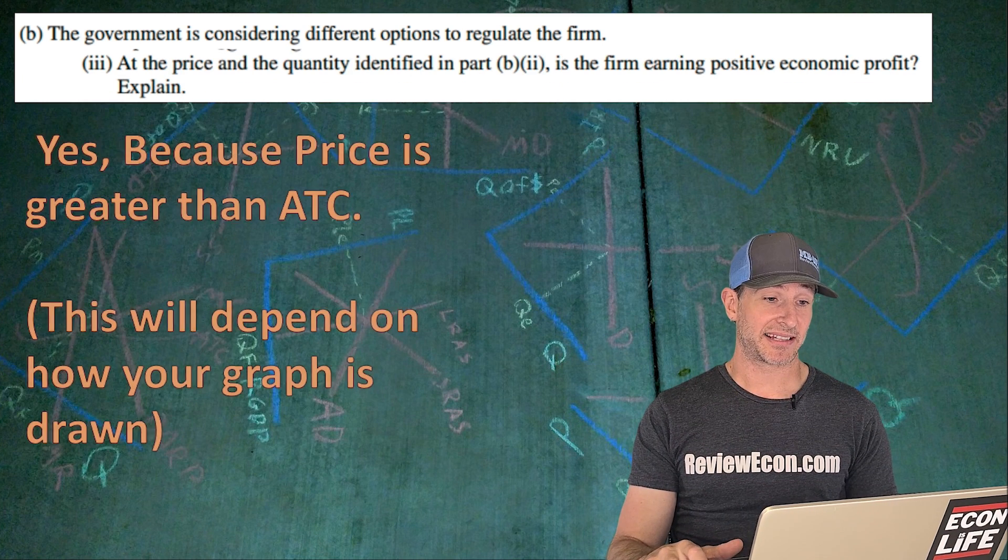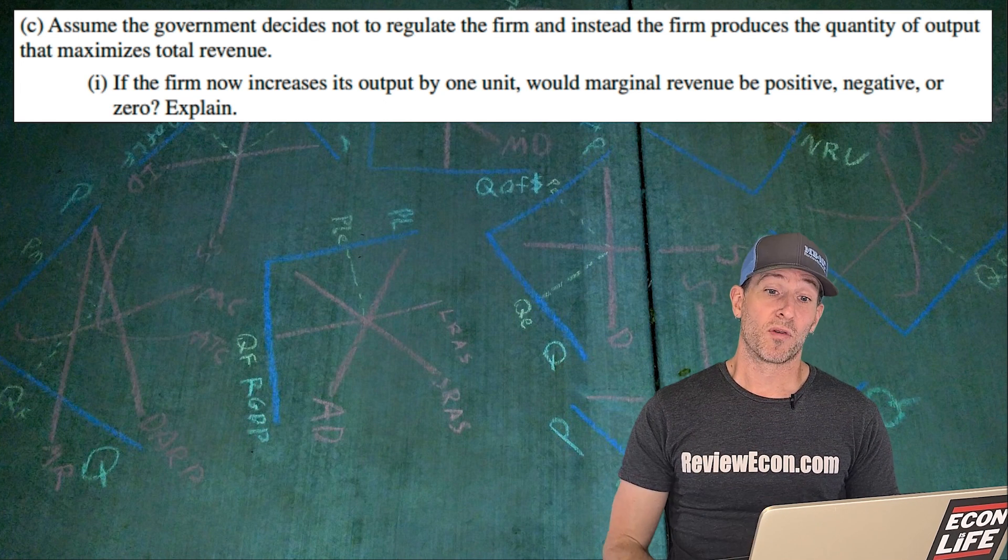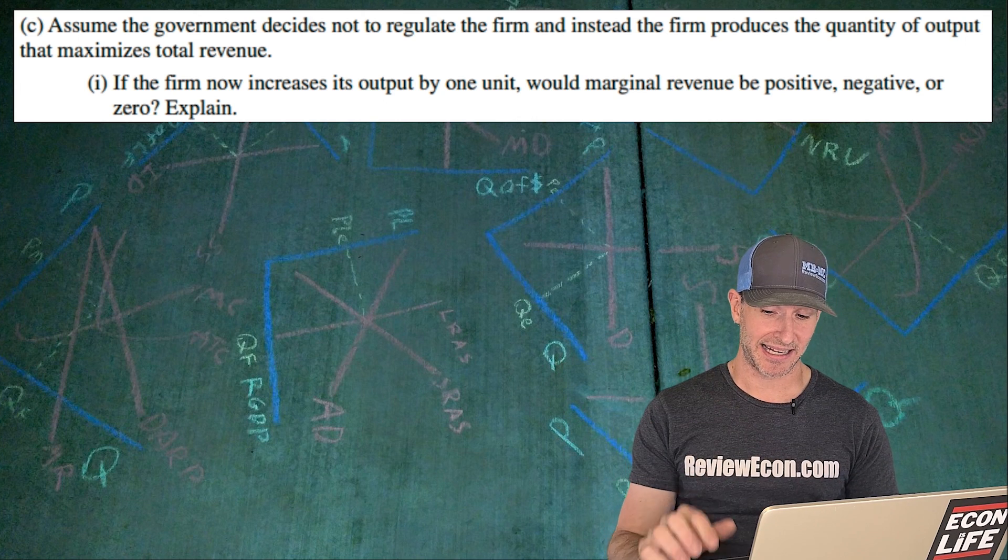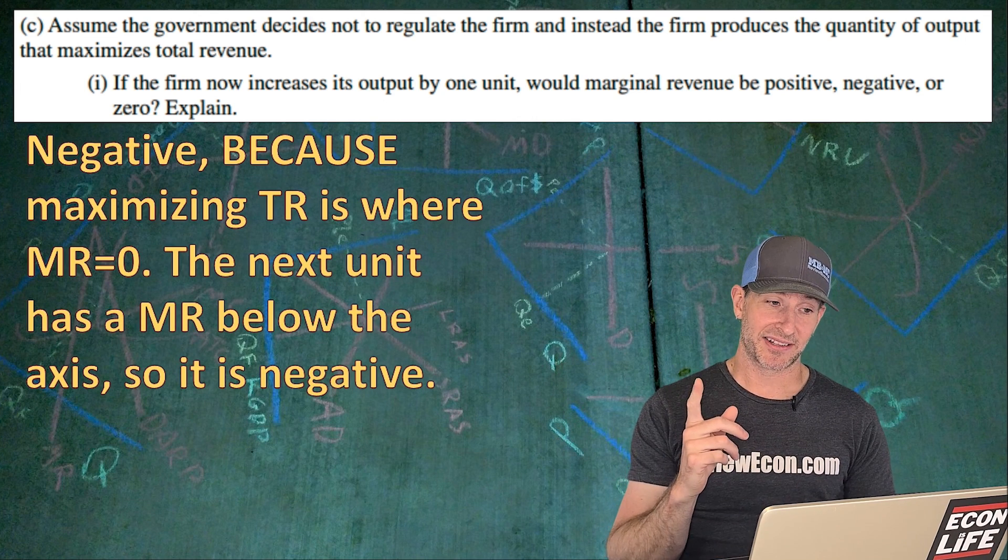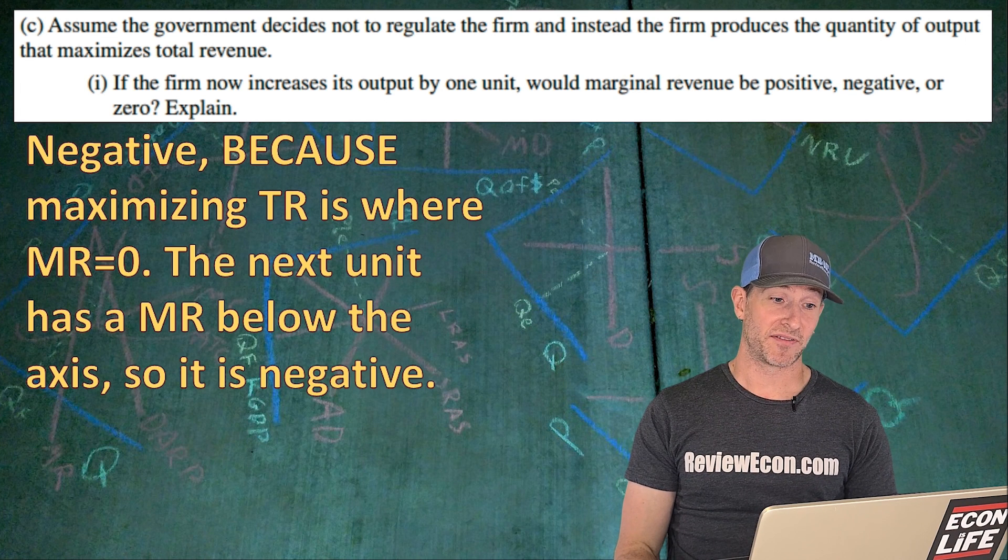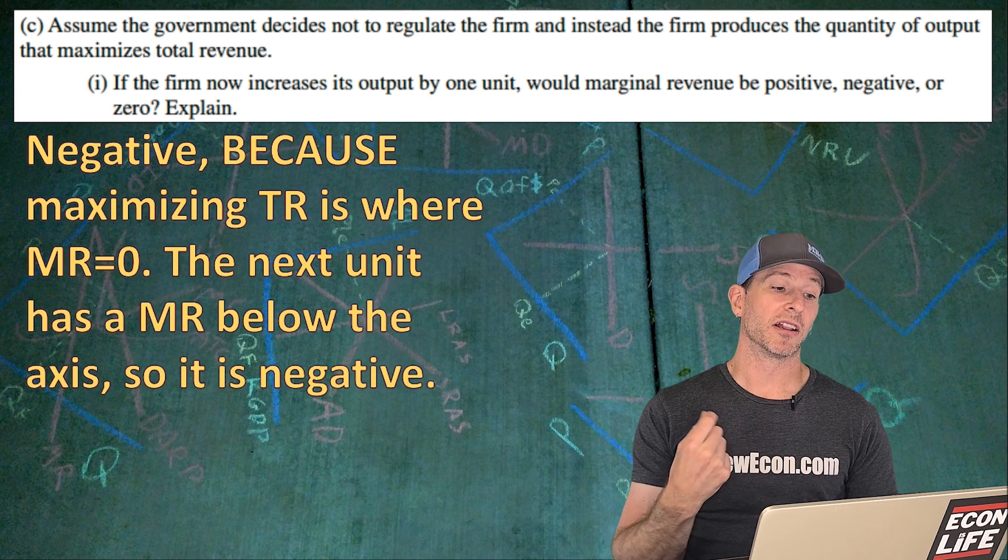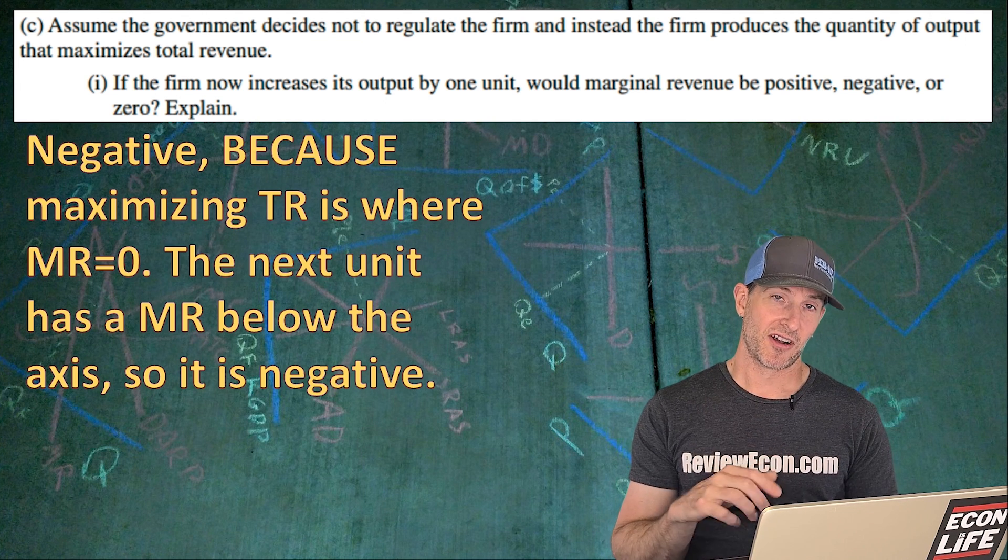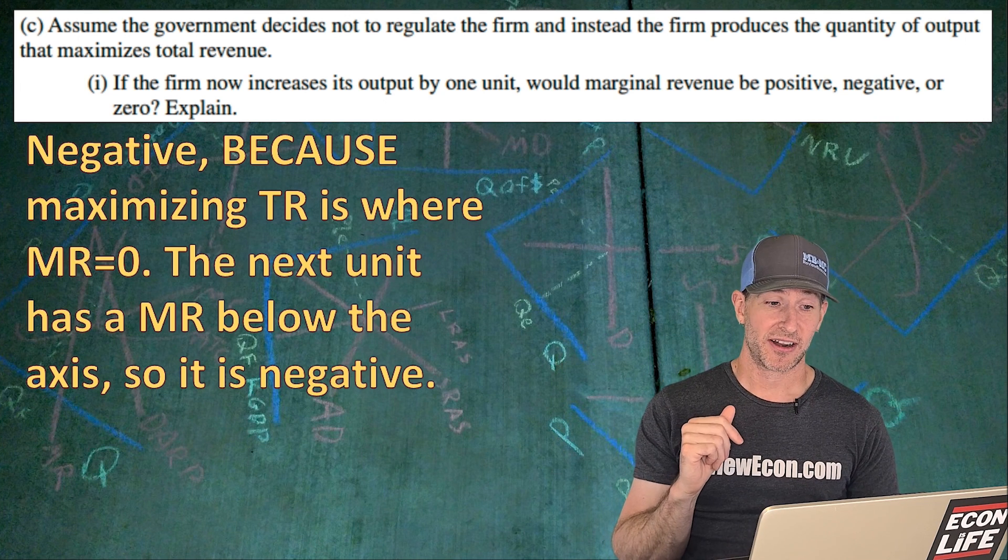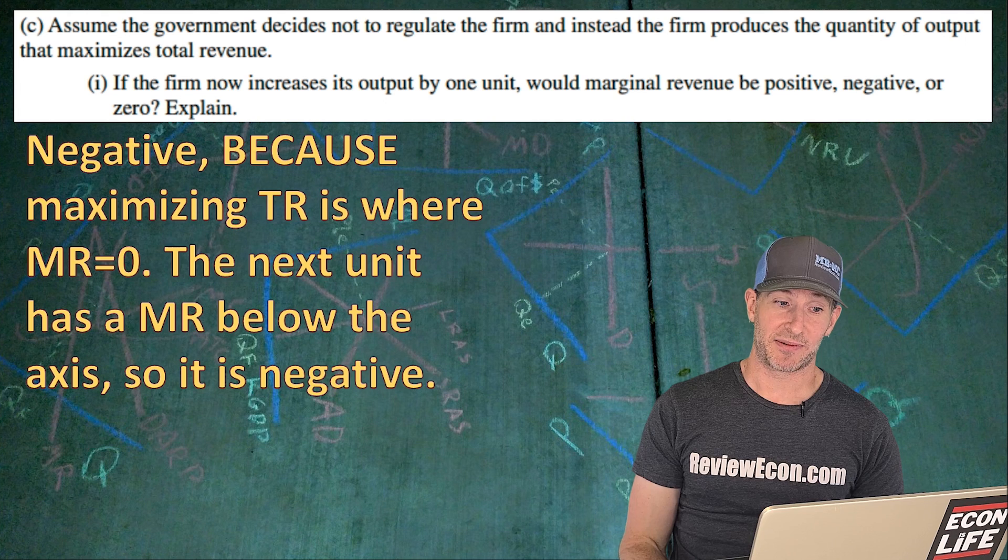So the question is asking if they increased output by one more unit from that point, would marginal revenue be positive, negative, or zero? Explain. And so there's my answer here, negative. And the reason why is because maximizing total revenue is where marginal revenue is zero. And the next unit has a marginal revenue below the axis, so it's negative. That would be the inelastic range of the demand curve that's above. So total revenue actually starts to fall at that point as they produce more units of output.